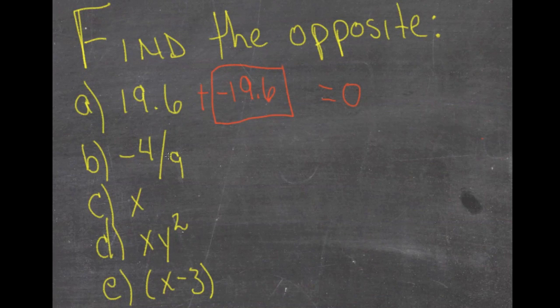The opposite of negative 4 ninths would be positive 4 ninths, because negative 4 ninths plus 4 ninths is 0.